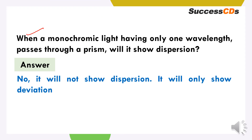When a monochromatic light having only one wavelength passes through a prism, will it show dispersion? The answer is it will show no dispersion. It will show only deviation. Dispersion means white light ka alag-alag colors of light break — but here, with monochromatic light, it will show only deviation, a deviated beam.